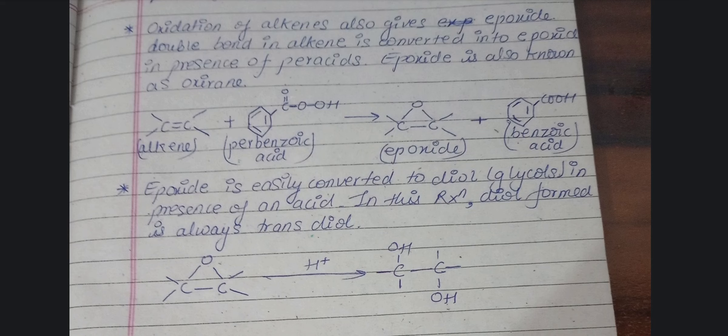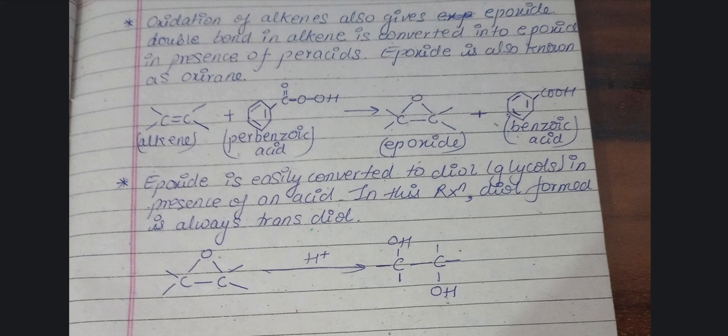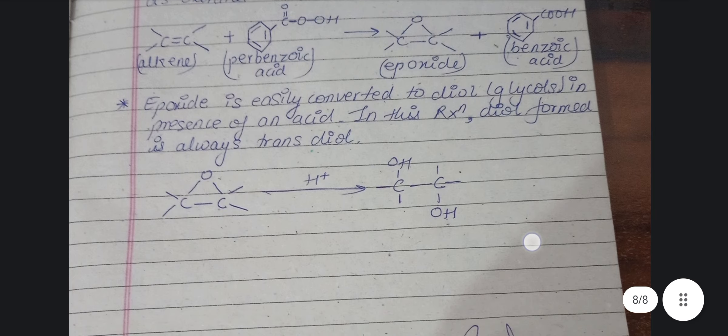Epoxide को oxirane भी कह सकते हो — अगर epoxide या oxirane लिखा आए, तो don't be confused. Epoxide जो होते हैं, easily diols (glycols) में convert हो सकते हैं in the presence of an acid, giving trans alcohols — where same groups are on opposite sides. So epoxide formation होता है when alkene reacts with perbenzoic acid, giving epoxide and benzoic acid.